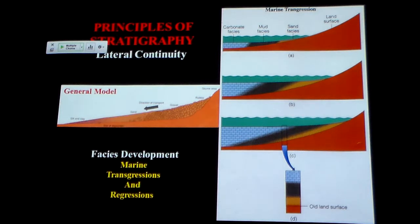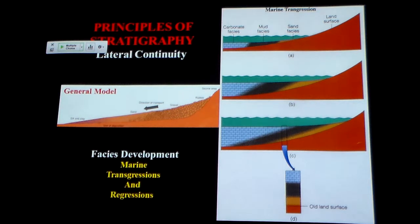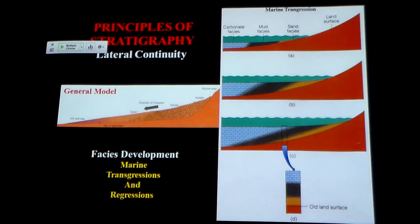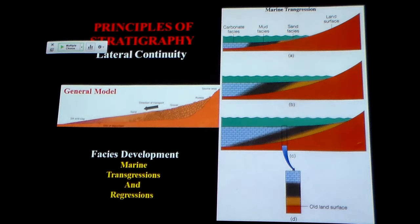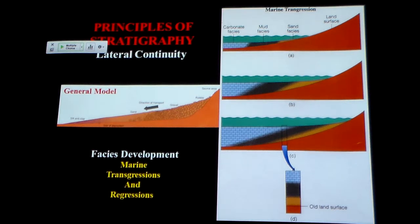If you remember, we talked about some basic ways we figure out relative time. We talked about the idea of the stratigraphic law, that everything is deposited originally horizontal. We talked about the rule of superposition, that the oldest stuff is at the bottom of the package and the youngest stuff is at the top.